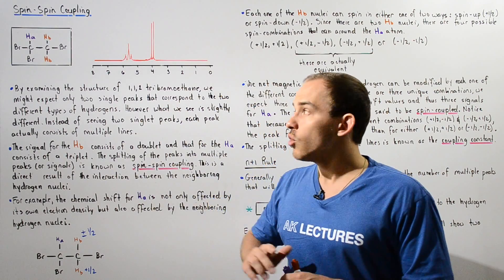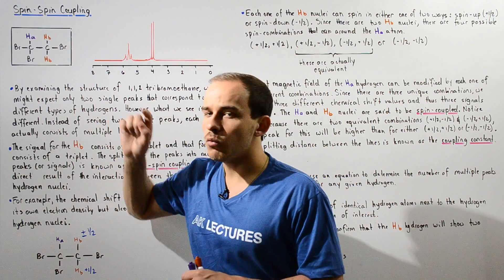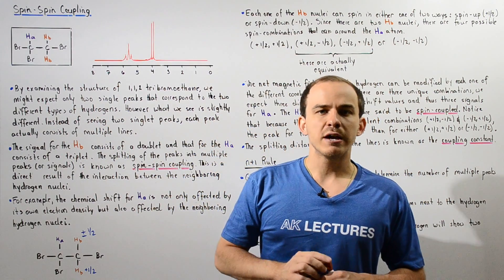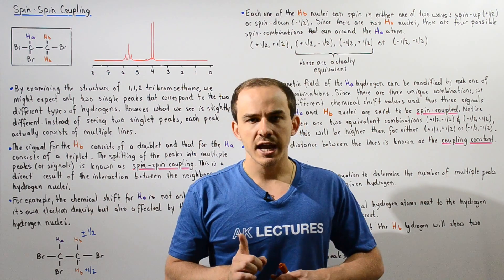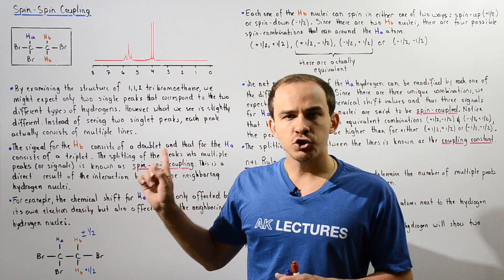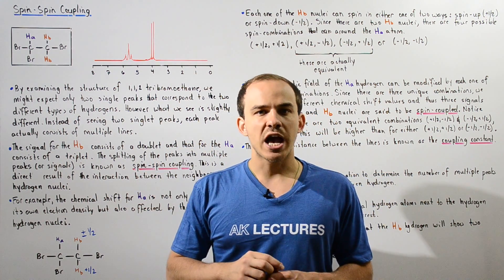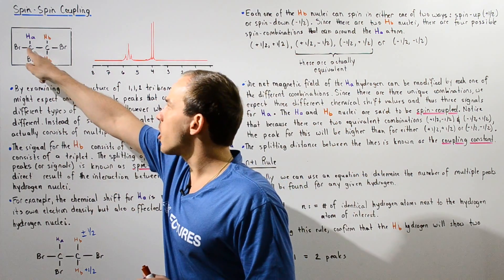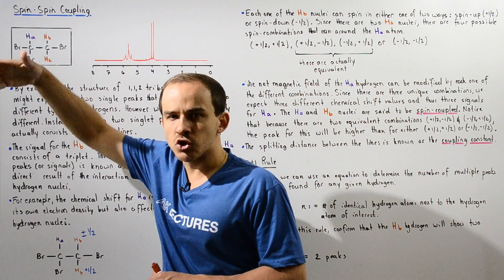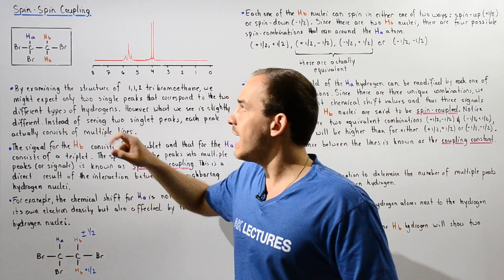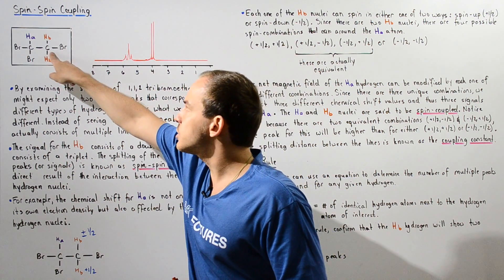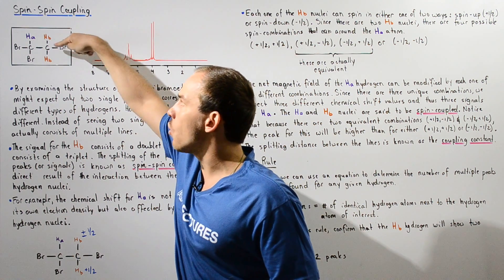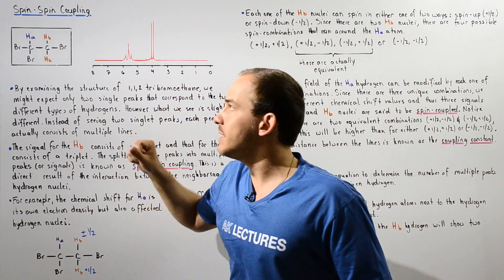Let's suppose we have the molecule 1,1,2-tribromoethane, which consists of two different H atoms. One carbon has one H atom — let's call it HA — and the other carbon has two identical H atoms — let's call them HB.